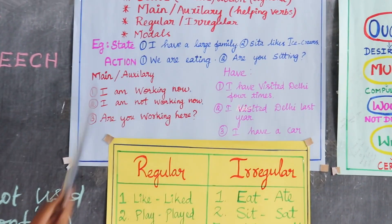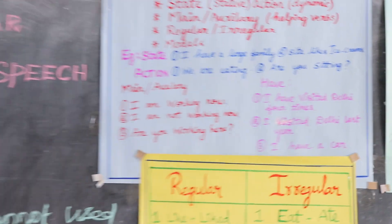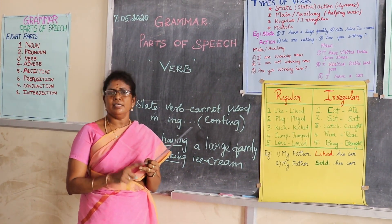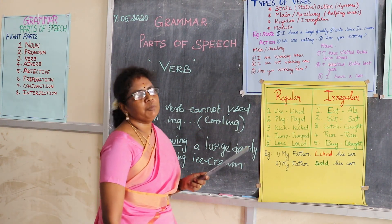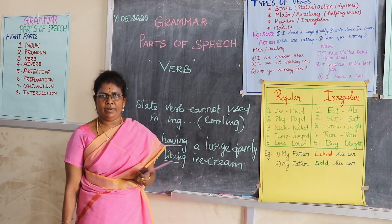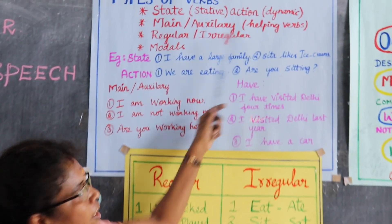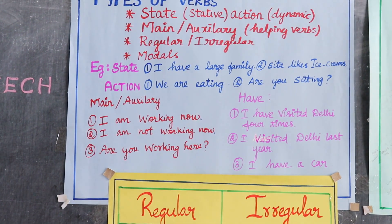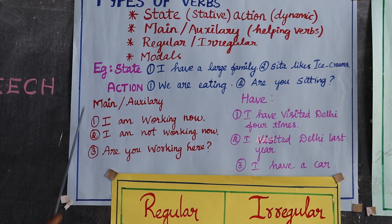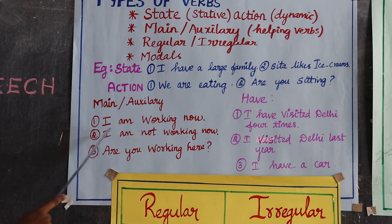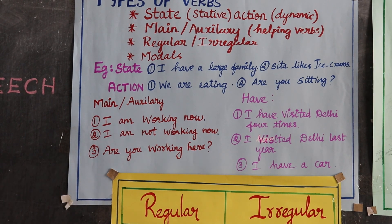Now let's move on to main and auxiliary verbs. What is a main verb and what is an auxiliary verb? Main verbs are like eat, run, sit, etc. Auxiliary verbs are like am, is, are, was, were — sometimes called helping verbs. Helping verbs help main verbs. For example: 'I am working now.' Here, 'am' is the auxiliary verb and 'working' is the main verb.